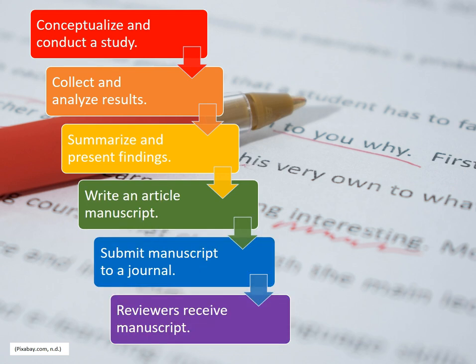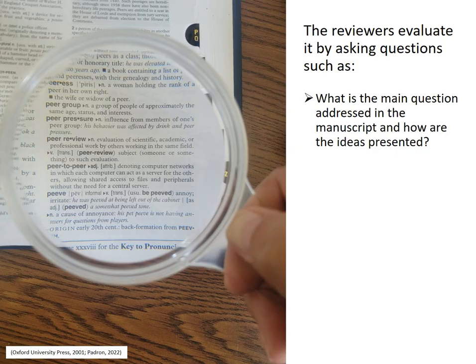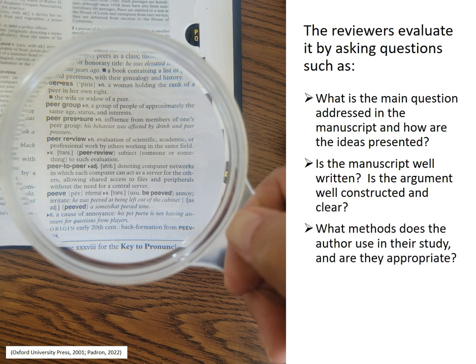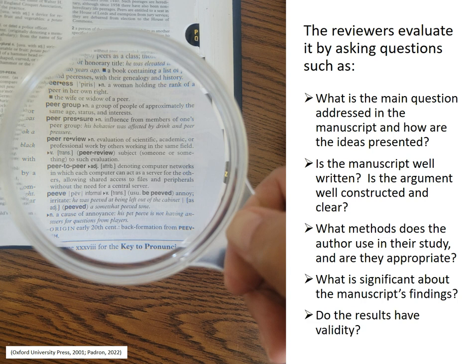In the sixth step, the journal's editors receive the manuscript. The reviewers evaluate it by asking questions such as: What is the main question addressed in the manuscript and how are the ideas presented? Is the manuscript well written? Is the argument well constructed and clear? What methods does the author use in their study and are they appropriate? What is significant about the manuscript's findings?